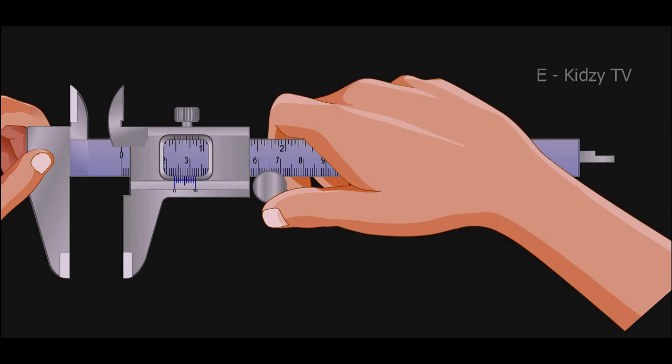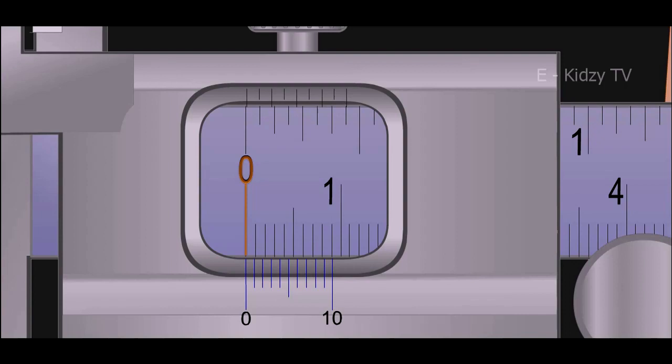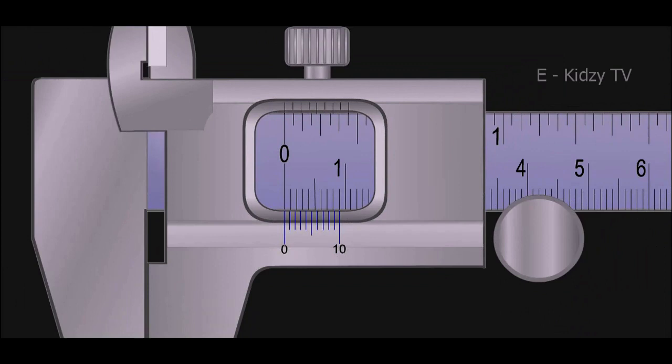You will see that zero of the main scale coincides with zero of the Vernier scale.